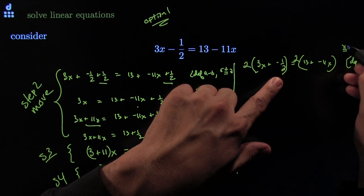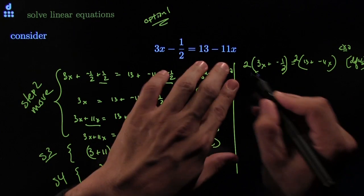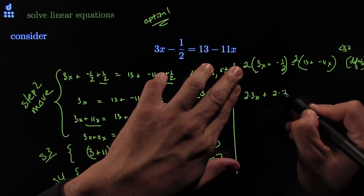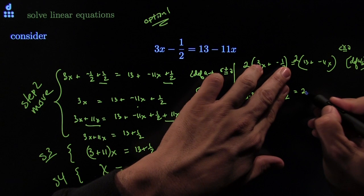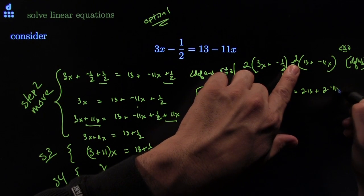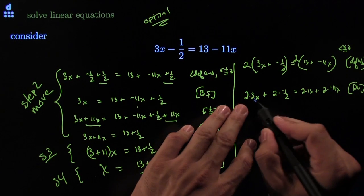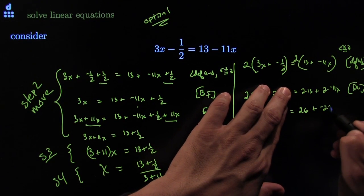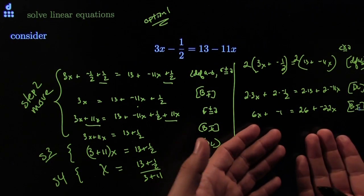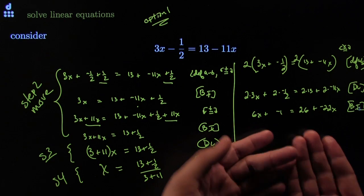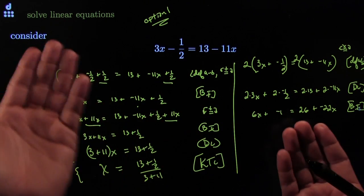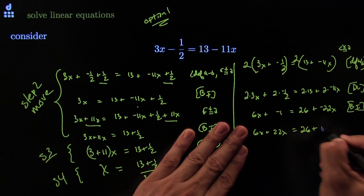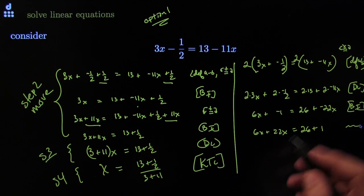Distributing the 2: on the left I get 2 times 3x plus 2 times negative one-half; on the right, 2 times 13 and 2 times negative 11x — by distributive law. That gives 6x plus negative 1 equals 26 plus negative 22x. Now you have an equivalent version of the equation with no fractions. Then moving terms: plus 22x on the right becomes 26 plus 1 on the other side — you move them to the other side and change the sign.